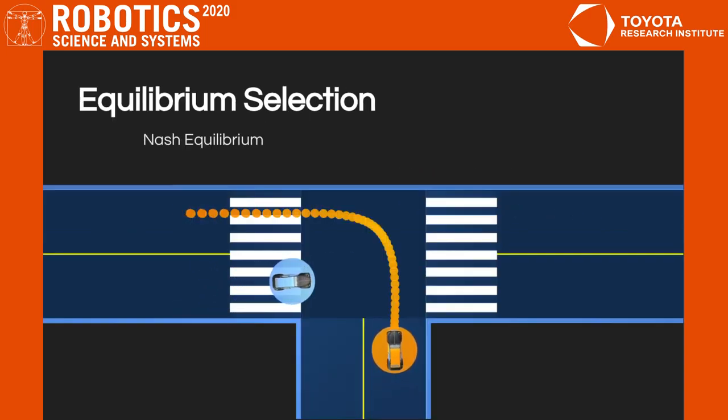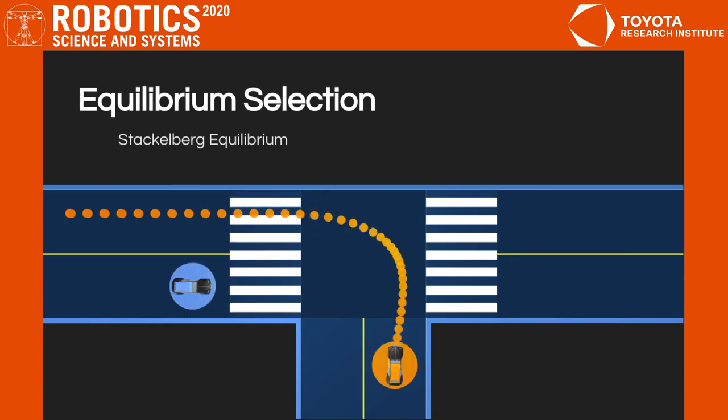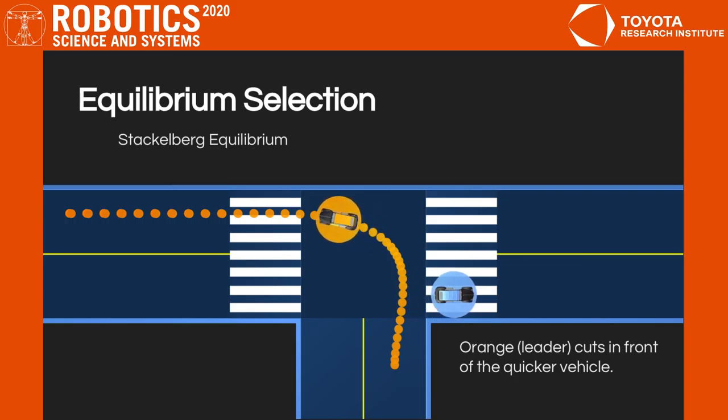This work focuses on finding Nash equilibrium solutions to dynamic games, as this type of solution is not assuming any hierarchy between the agents, and tends to generate behavior where agents share responsibility for avoiding collisions. On the contrary, Stackelberg equilibrium solutions often lead to overly aggressive behavior for the leader of the game.